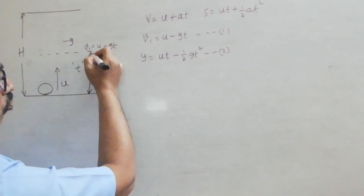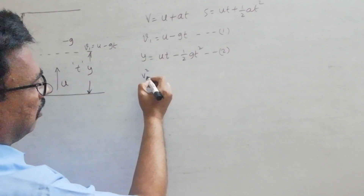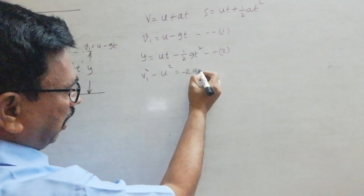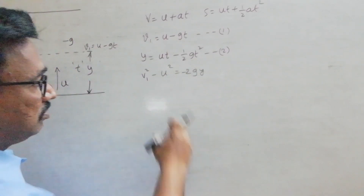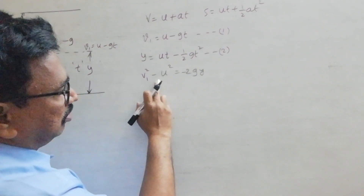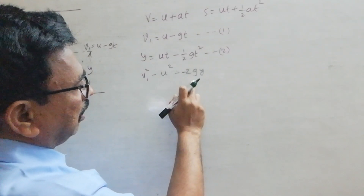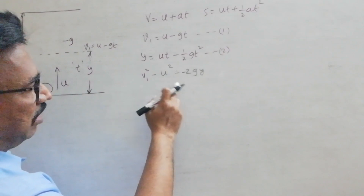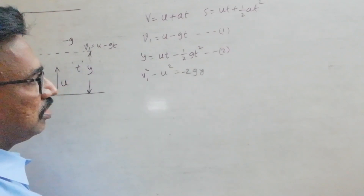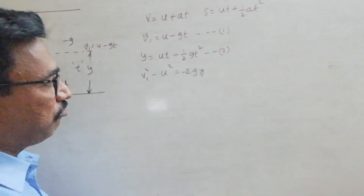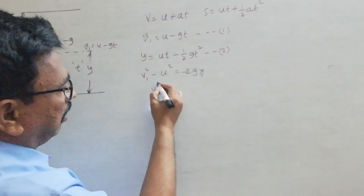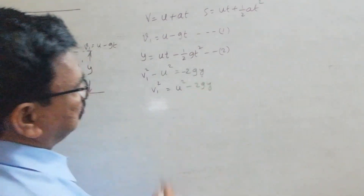Similarly, after travelling distance Y, we can use the other relation: V1 squared minus U squared equal to minus 2GY. Since U is greater than V1 as the body decelerates in the upward direction, V1 squared minus U squared is negative. Since A is also negative (minus G), we get V1 squared equal to U squared minus 2GY. Using this relation we can find the velocity V1 if the vertical displacement Y is given instead of time.